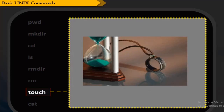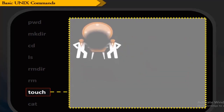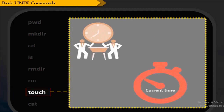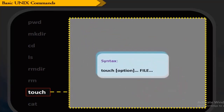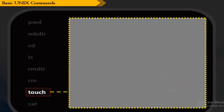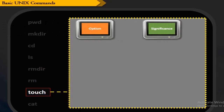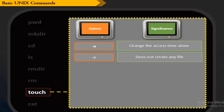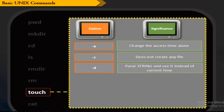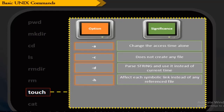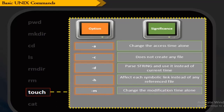The touch command is used to change file timestamps. It updates the access and modification times of each file to the current time. The syntax is shown here. The -a option changes only the access time. The -c (no create) option does not create any file. The -d (date) option uses a string to represent the date and parses it instead of using the current time. The -h (no dereference) option affects each symbolic link instead of any referenced file. The -m option changes only the modification time.